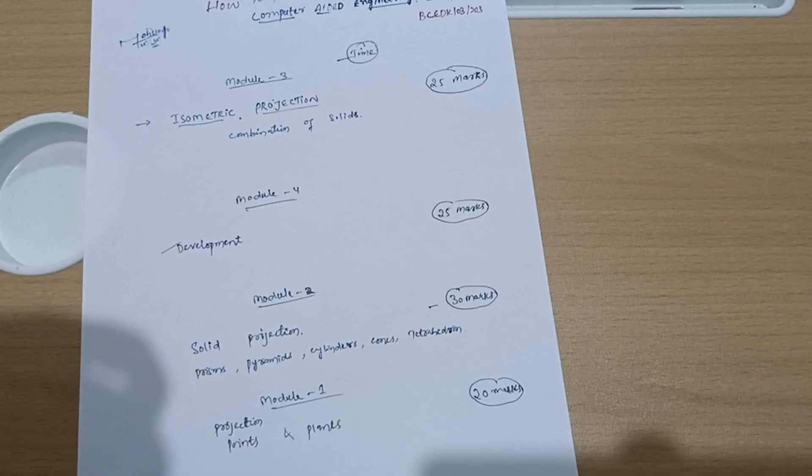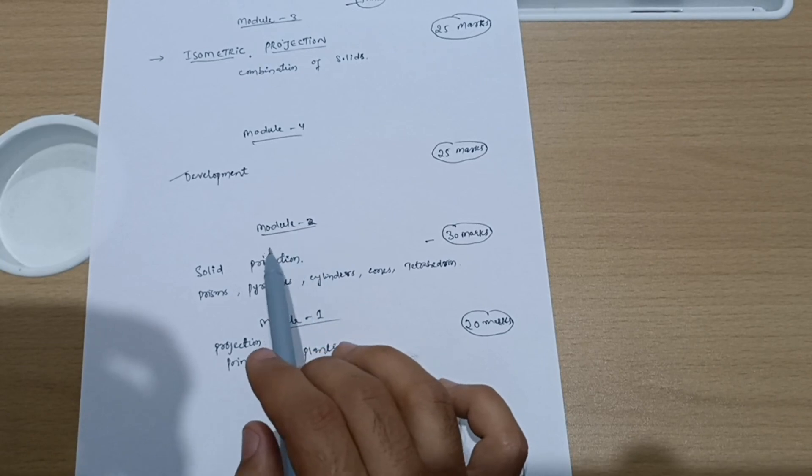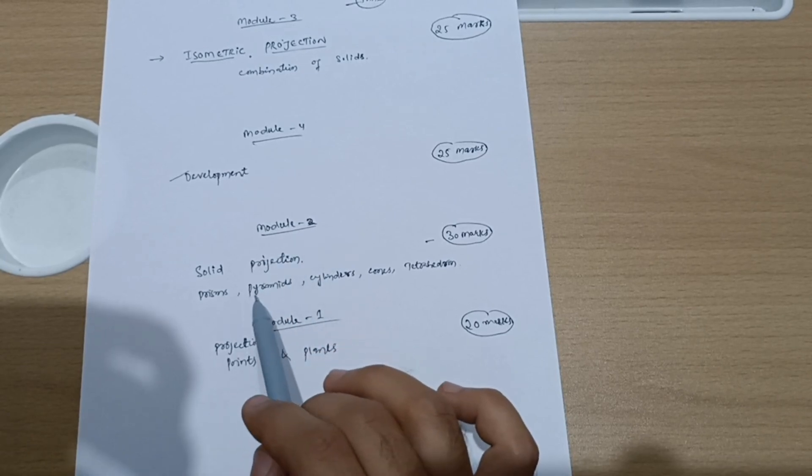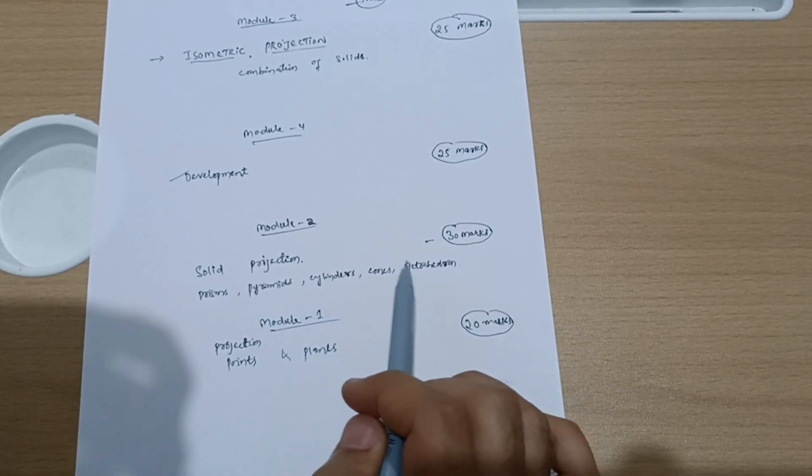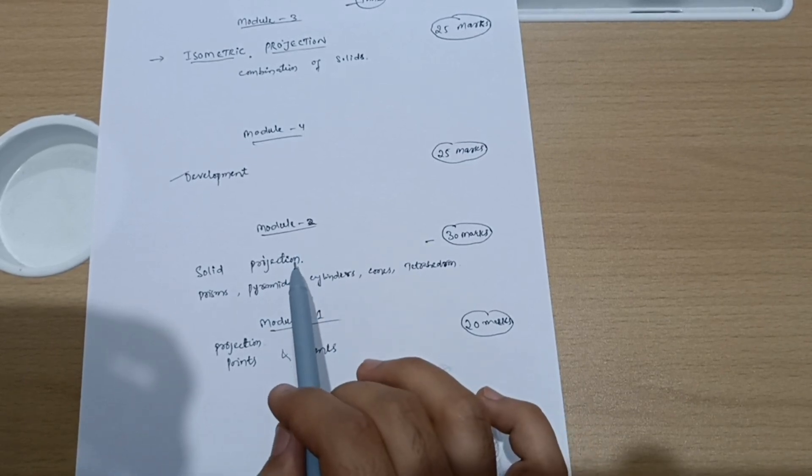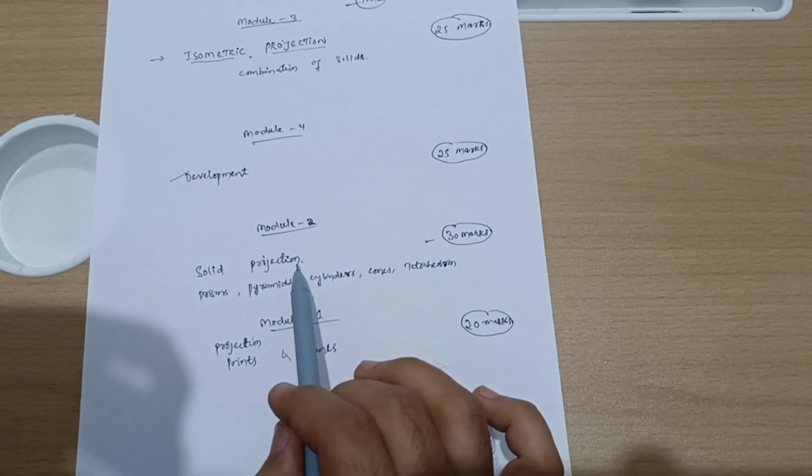Once you complete the development, then go for Module 2, which is solid projection. Prisms are there - pentagonal prism, hexagonal prism, pyramid, cylinders, cones, and tetrahedron. You should practice a lot for solid projection as it takes a lot of time to complete this one.